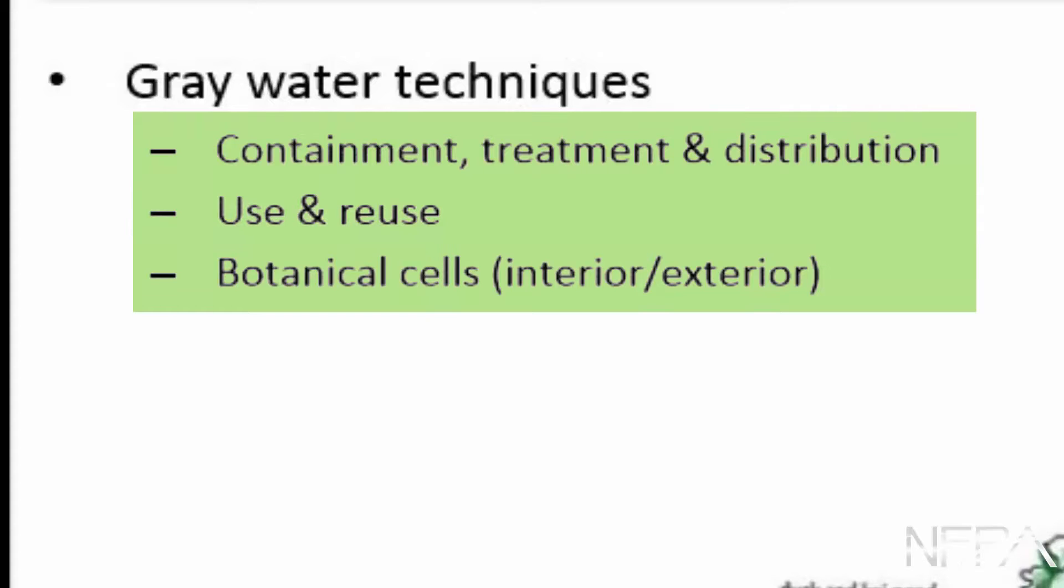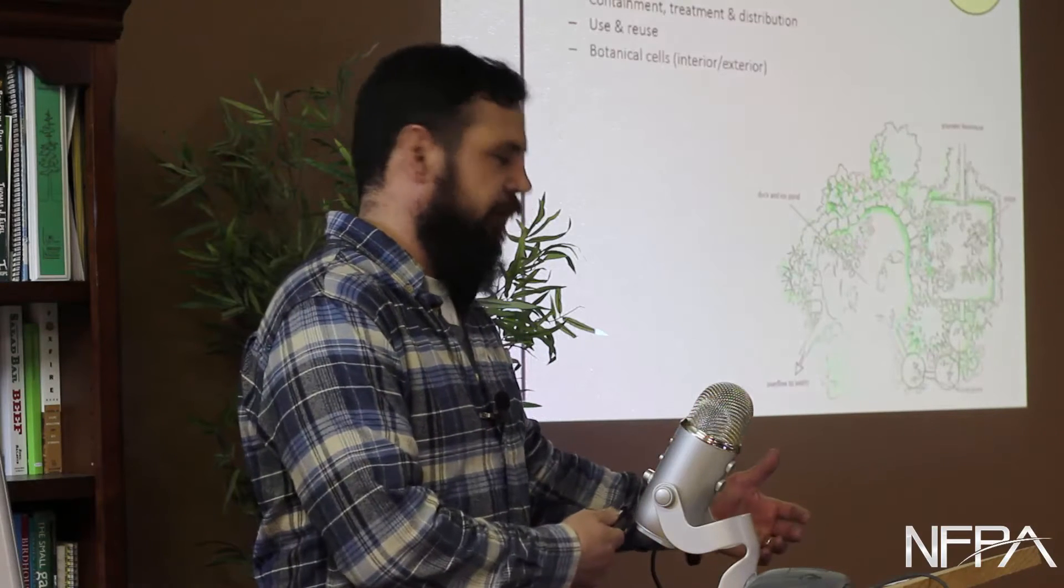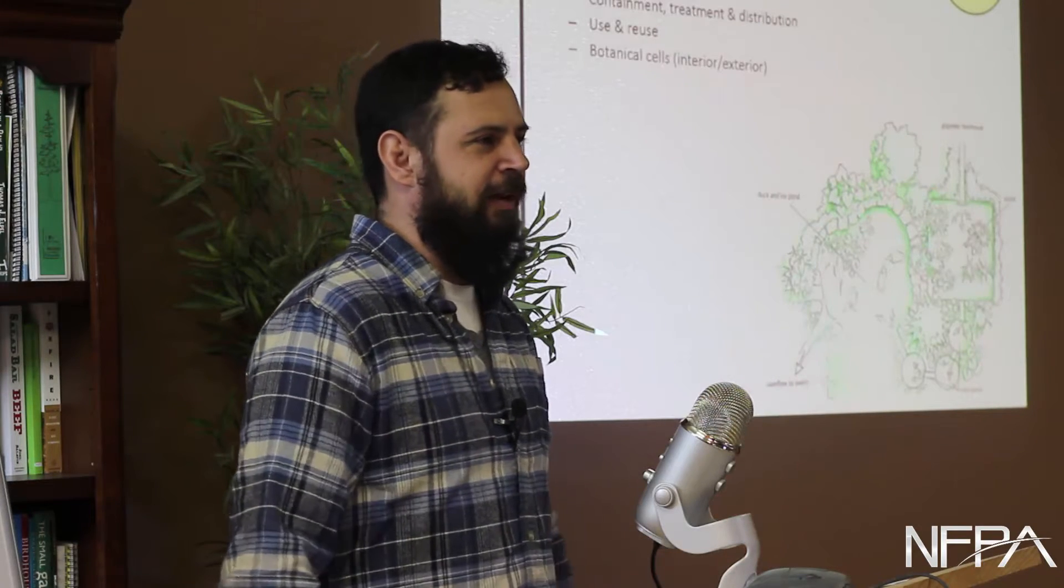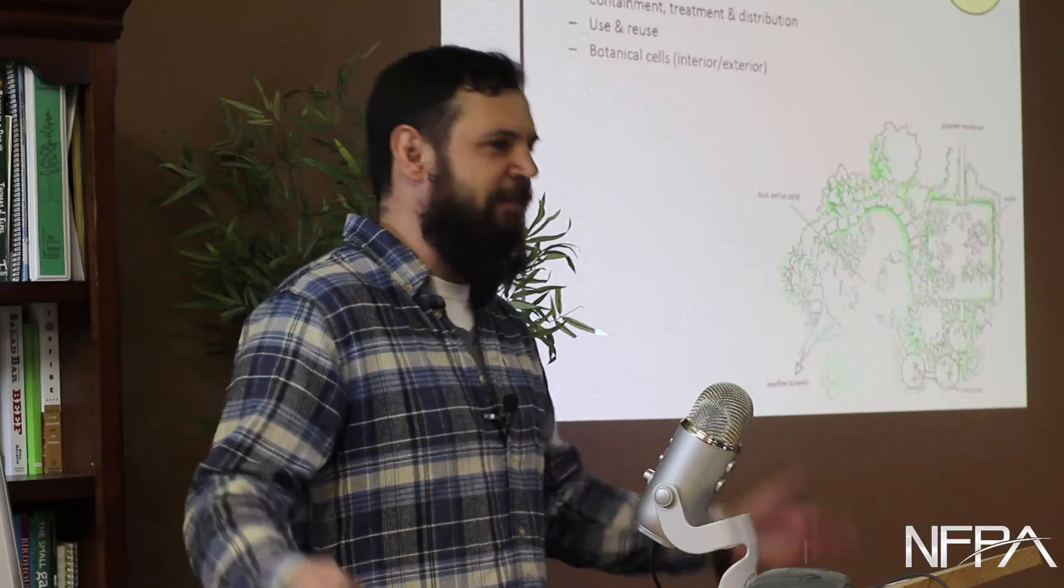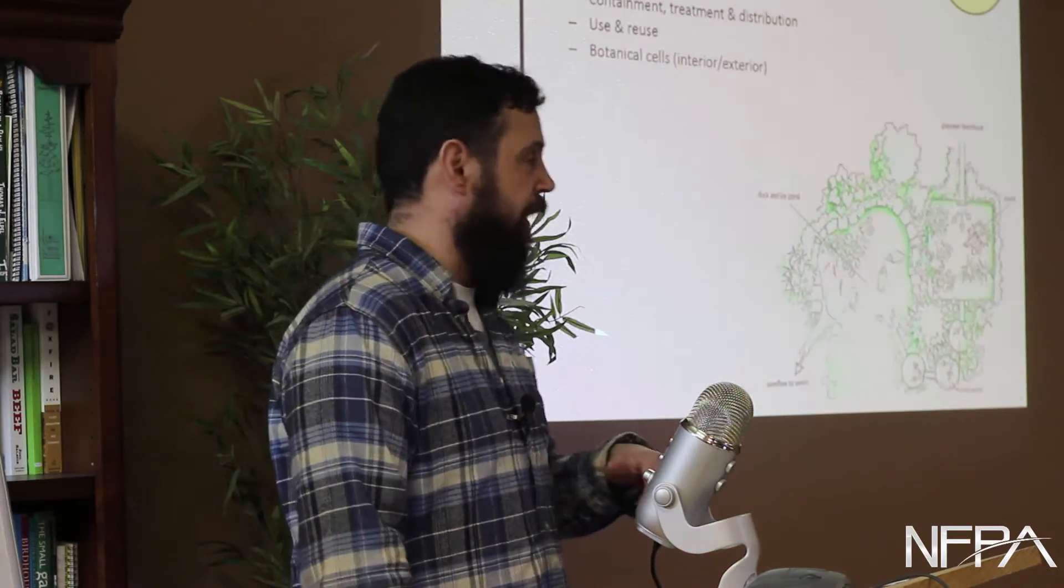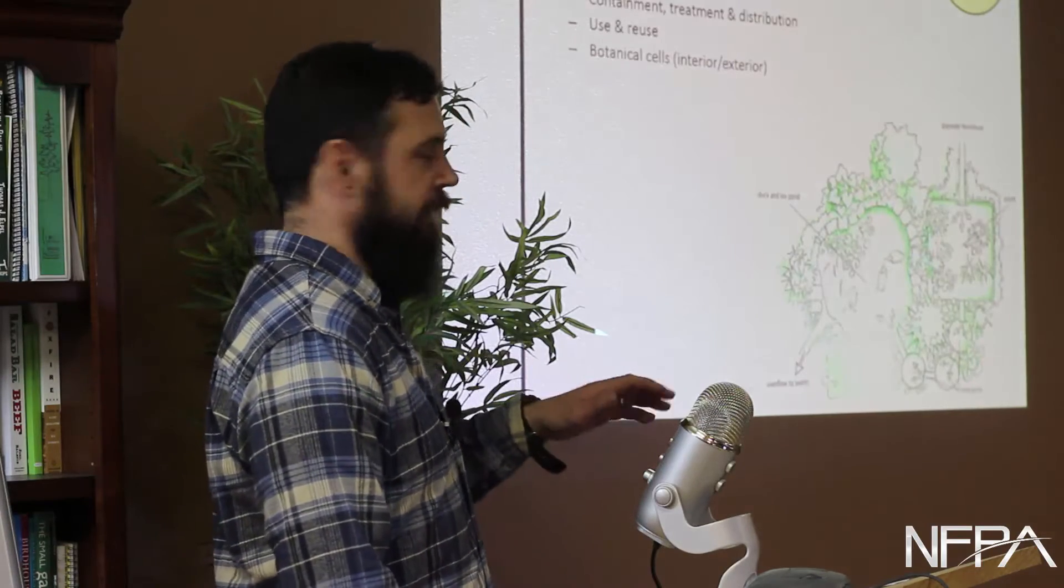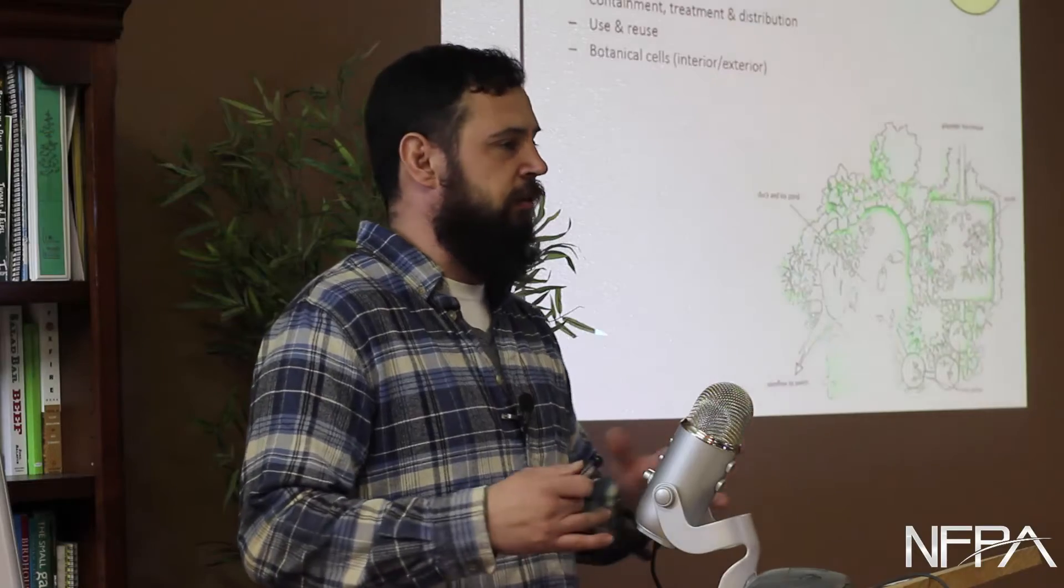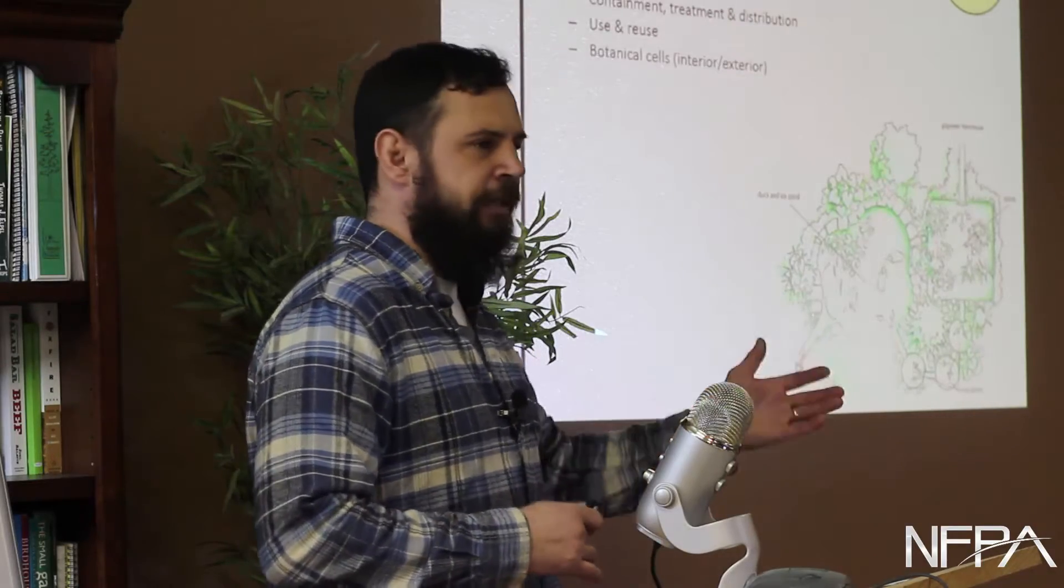Use and reuse. What a great principle. We flush three gallons of totally potable drinkable water down the toilet every flush. Does that make any sense at all? It really doesn't when you think about it from a water conservation perspective. So that is an example. And like I said, botanical cells using plants to filter interior and exterior.